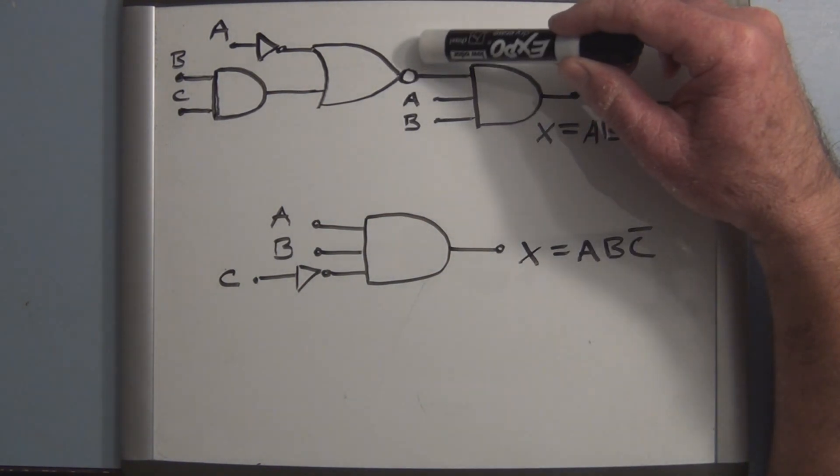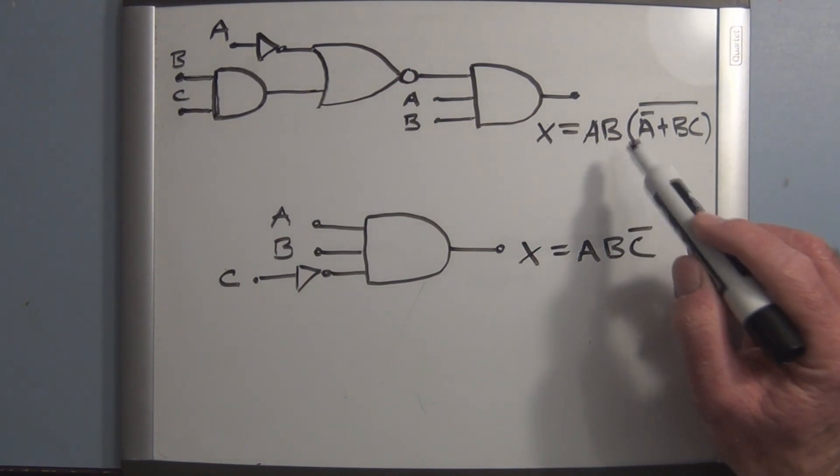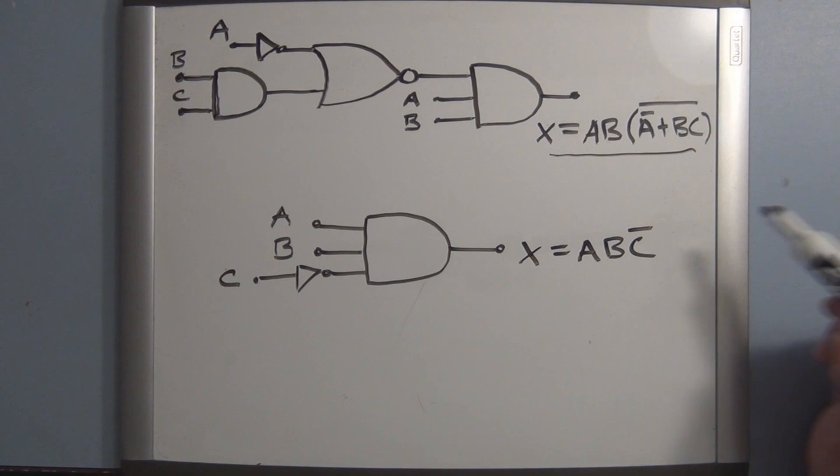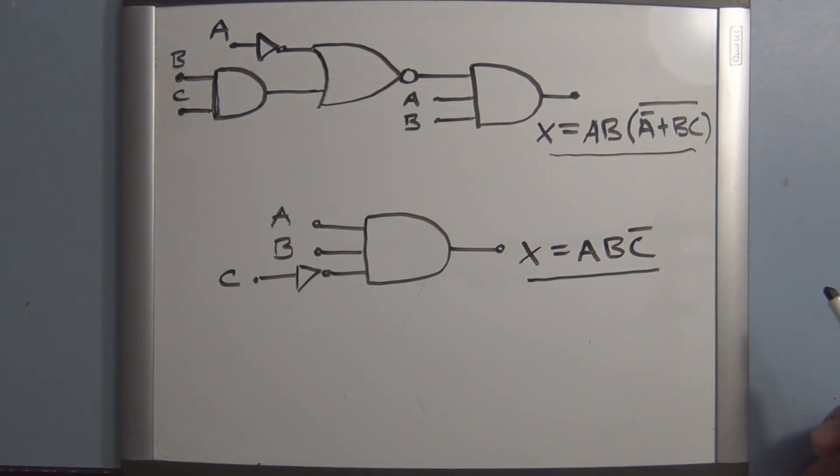I forgot this inverter symbol right here, but someone asked me to go over this problem again to show how you get from this Boolean equation to this simplified Boolean equation. I'd like to have 100% retention, but I don't, so I have to go over this to remind myself how to approach this.